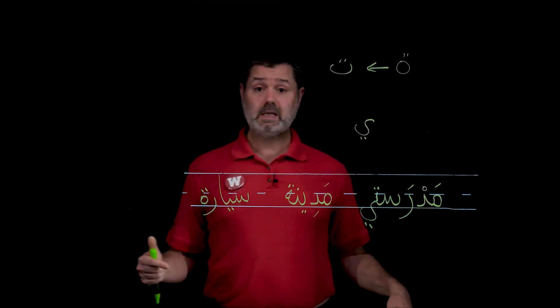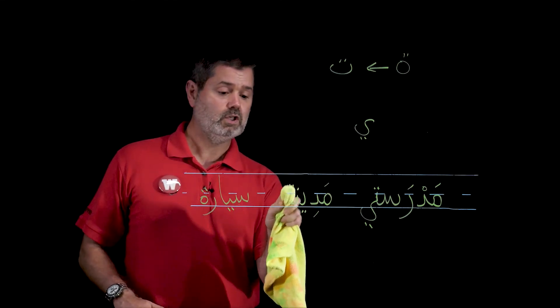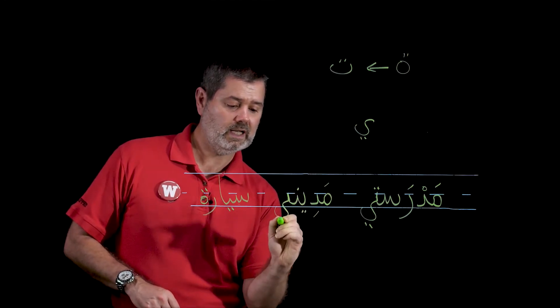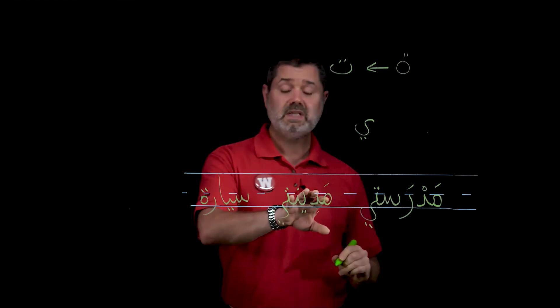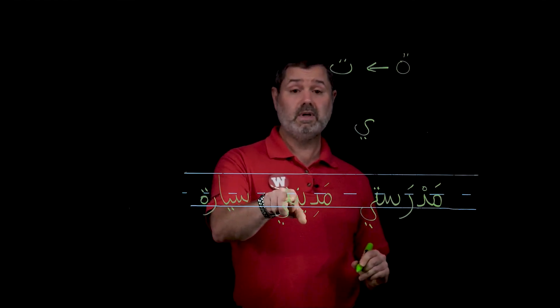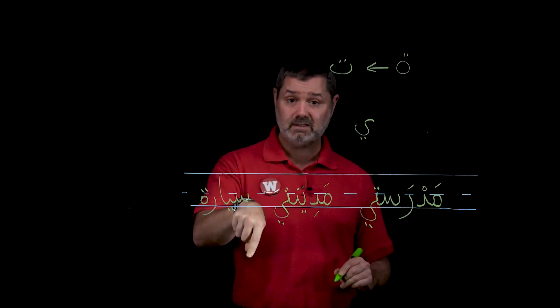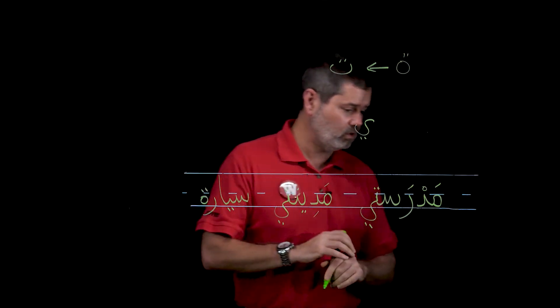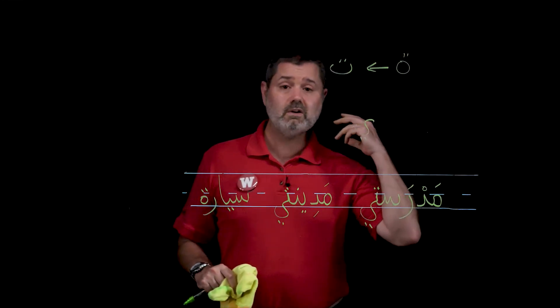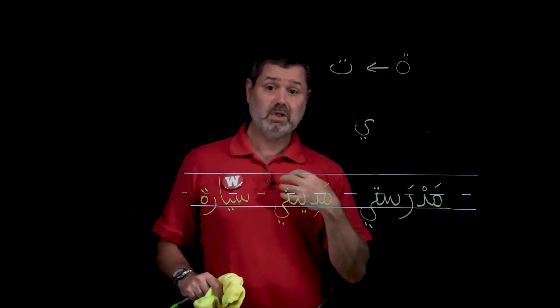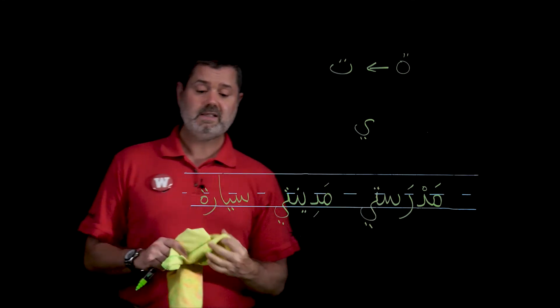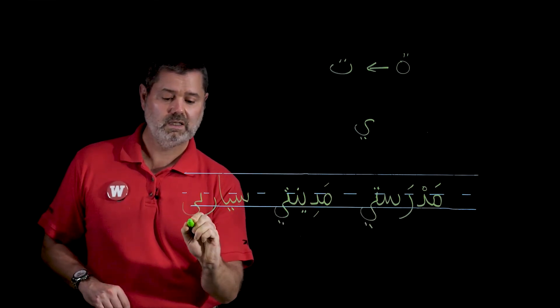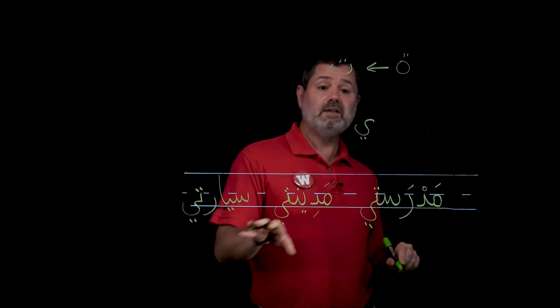Same thing with medina. If I want to say my city, I have to change tamabuta to a regular old ta, and then I add the suffix. Now I had medina. I have to pronounce this. Medina-te. Madrasa-te, medina-te. That might sound different to you now, but you'll get used to noticing this. As soon as you hear madrasa-te, you'll know that's a madrasa belonging to e. And lastly, sayyara. Again, this changes to a ta. Sayyara-te.